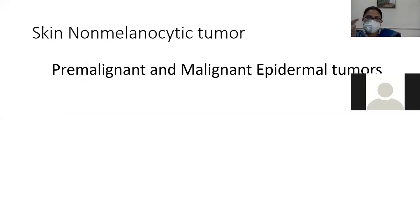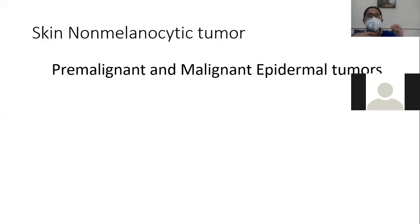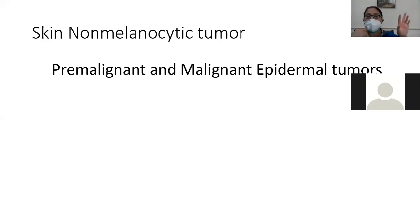Summary: nevus is a benign lesion — a benign neoplasm of melanocytes — while melanoma is a malignant neoplasm. The size of nevus is less than 6 mm, while melanoma is more than 10 mm. Types of nevus include intradermal, junctional, and compound. Types of melanoma include superficial spreading, nodular, and lentigo maligna melanoma. In nevus, melanocytes are benign with no cytological atypia and no mitosis. In melanoma there is cytological atypia, mitosis, prominent nucleoli, and obscuring of the dermo-epidermal junction. The behavior of nevus is benign while melanoma is malignant and can spread.